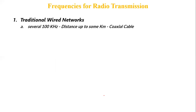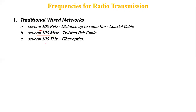Starting with traditional wired networks: for communication over several kilometers, signals with several hundred kilohertz are used, typically over coaxial cable. Twisted pair cable supports signals with frequencies of several hundred megahertz. Optical fiber cable supports signals with frequencies of several hundred terahertz. Our concentration, however, is on wireless communication and radio transmission.